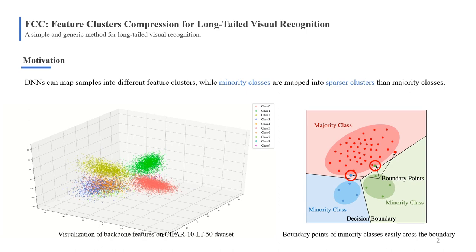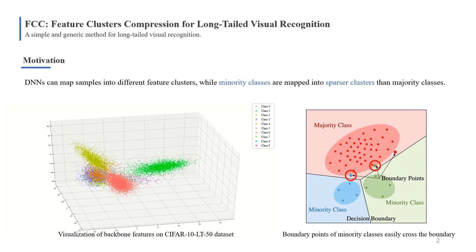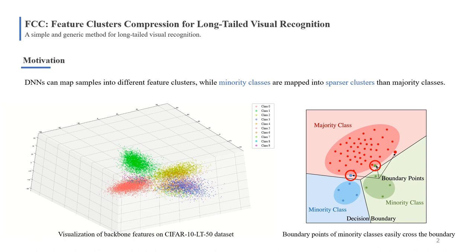Deep neural networks can map samples into different clusters in feature space. On long-tailed datasets, minority classes commonly exhibit sparser clusters than majority classes.